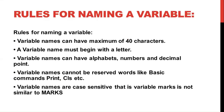There are certain rules for naming a variable. A variable name can have a maximum of 40 characters. A variable name must begin with a letter — so a variable named '1a' would be wrong; it can be 'a1' but cannot start with a number. Variable names can have alphabets, numbers, and decimals. It cannot be any reserved word like basic commands — print, cls, etc. Variable names are case sensitive, so 'marks' in lowercase and 'marks' in uppercase would be treated as separate variable names.